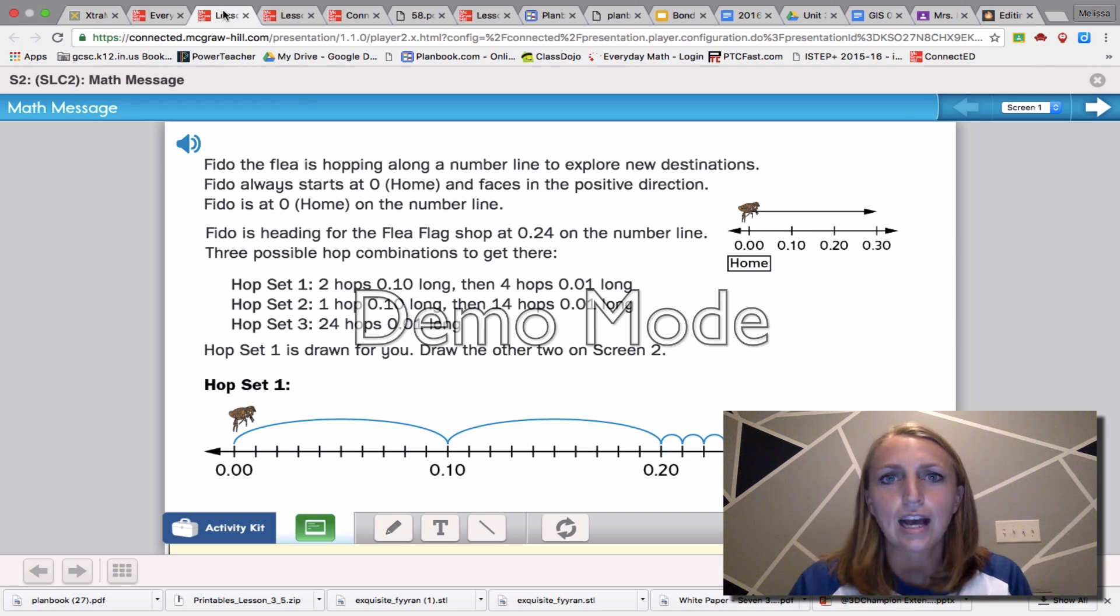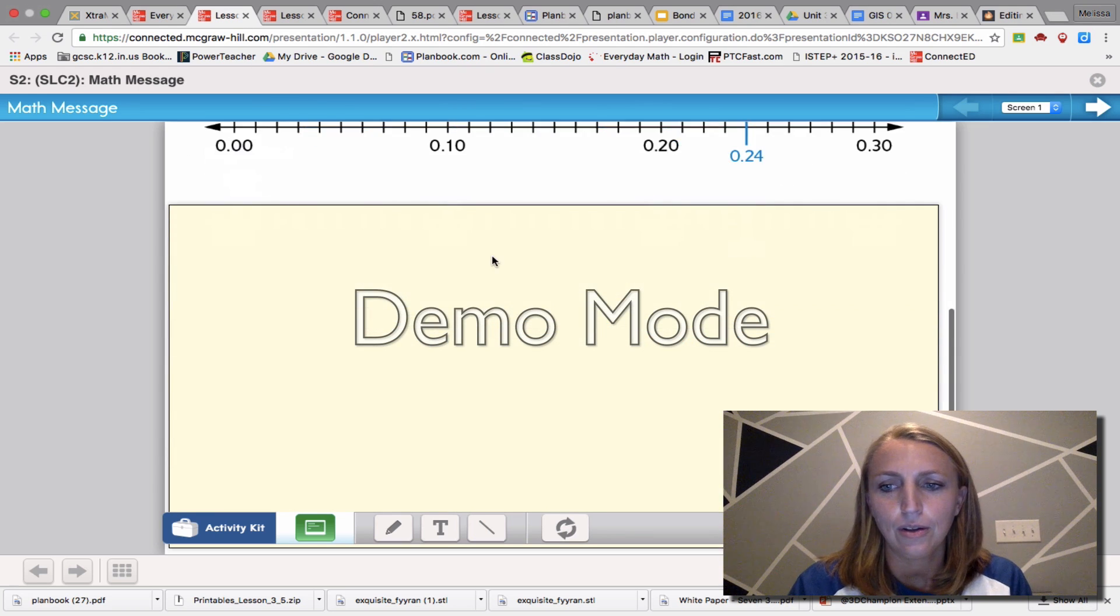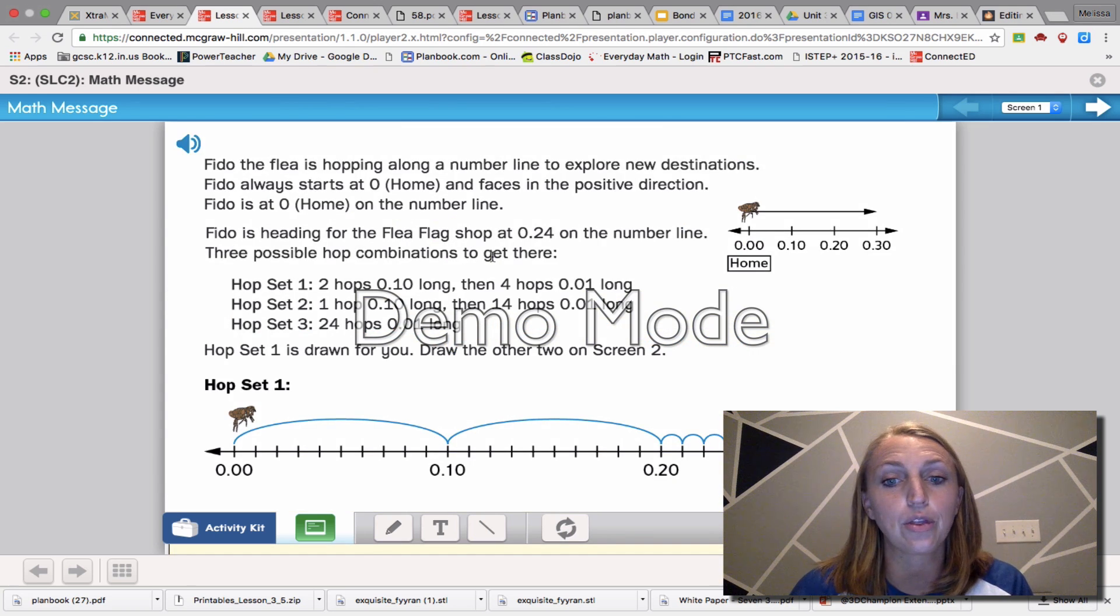So take a look at your math message. I believe it's lesson three two, your math message. I believe it's on page 107. Find it till your page looks like this. Fido the flea is hopping along a number line to explore new destinations. Fido always starts at zero home and faces in the positive direction. Fido is at zero home on the number line. Fido is heading for the flea flag shop at 24 hundredths on the number line. Three possible hop combinations to get there.